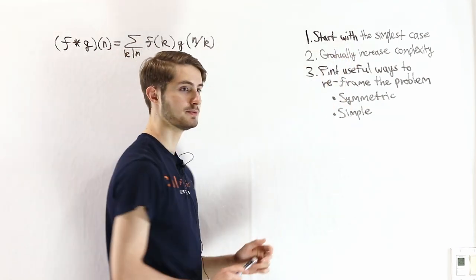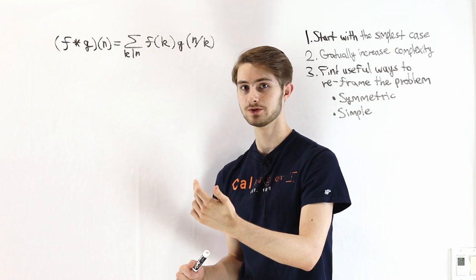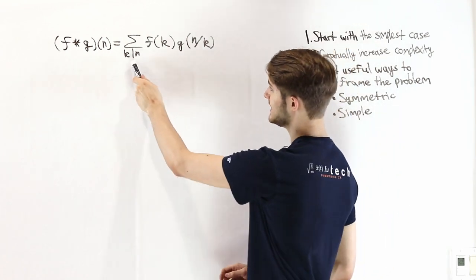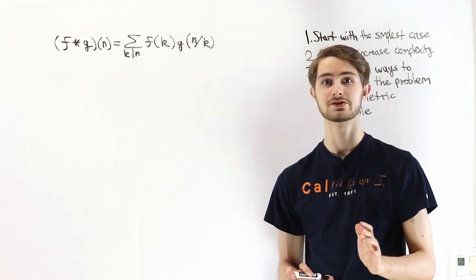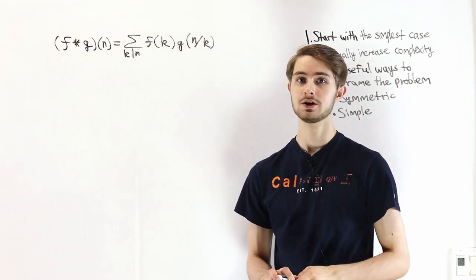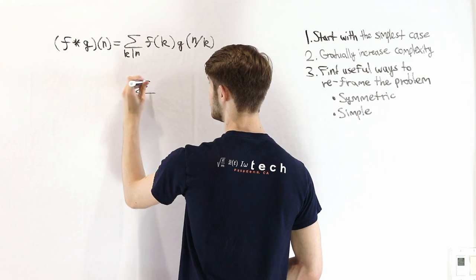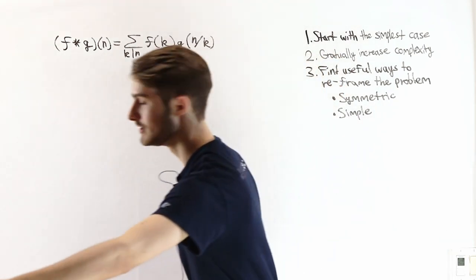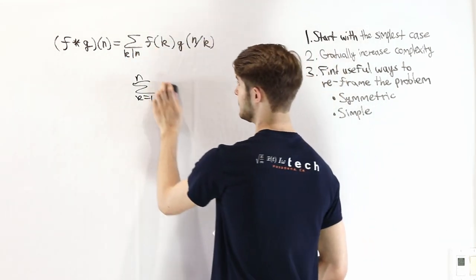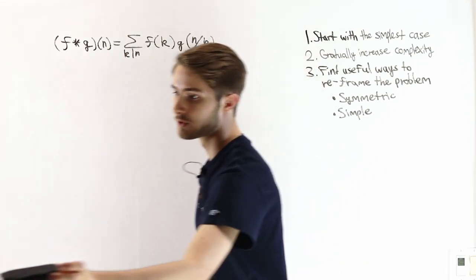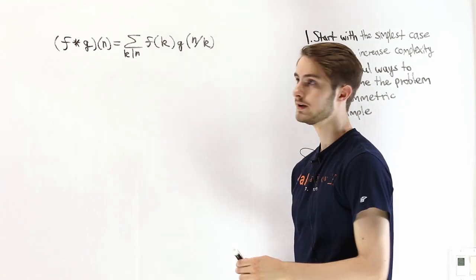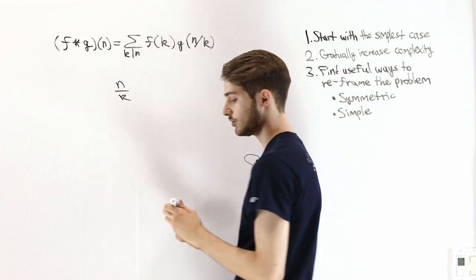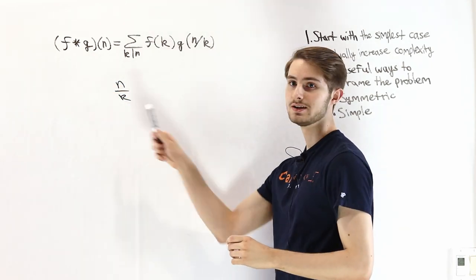Let's start with the simplest case. When looking at this convolution, we need to take a look at the index, because this is not an ordinary index. Normally when we do sums, we're used to taking the sum from k equals 1 to n, just counting up. But here we're looking at all integers k which divide n. When we say k divides n, that means n over k is a whole number — in other words, k needs to be a factor of n.